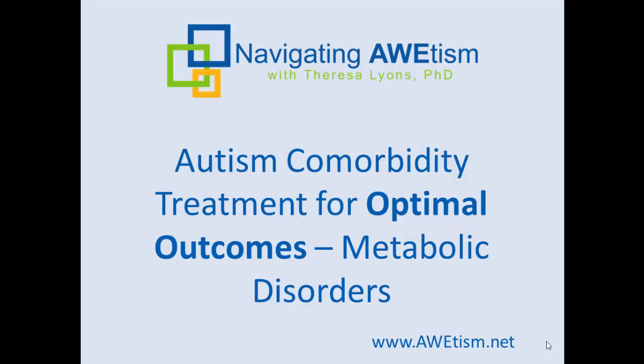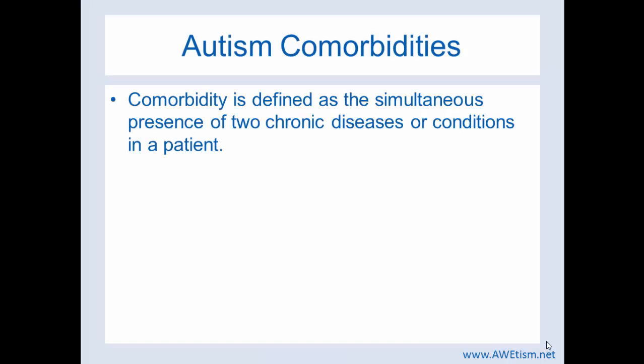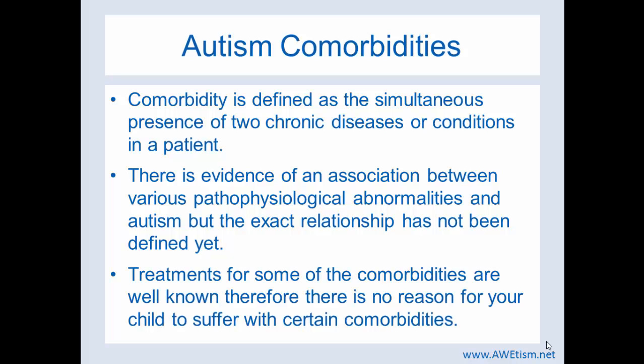Understanding your child's comorbidities that go along with their autism is an important step in optimal outcomes. So today we will deep dive into one of them. Comorbidity is defined as the simultaneous presence of two chronic diseases or conditions in a patient. Treatments of these comorbidities are well known, so there's no reason for your child to suffer with certain comorbidities. It's really something to focus on when you're healing autism — healing autism and all the related symptoms and other comorbidities.